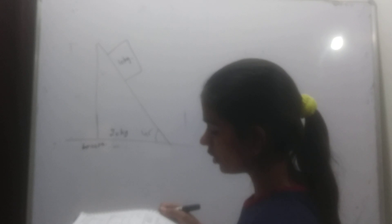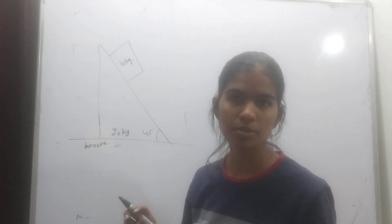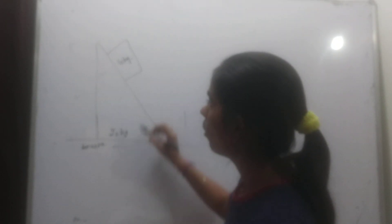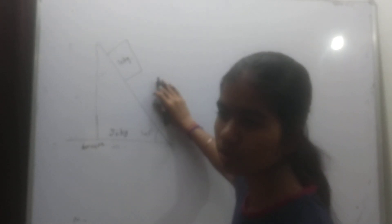Find the acceleration of the wedge so that the 10 kg block remains at rest with respect to the wedge. We have the inclined surface or wedge, and we need to push the wedge from the left to keep the block at rest.